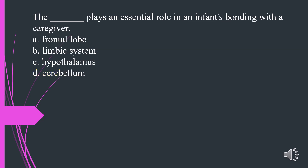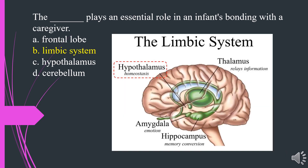What plays an essential role in an infant's bonding with a caregiver? A. Frontal lobe. B. Limbic system. C. Hypothalamus. D. Cerebellum. The answer is B. Limbic system.